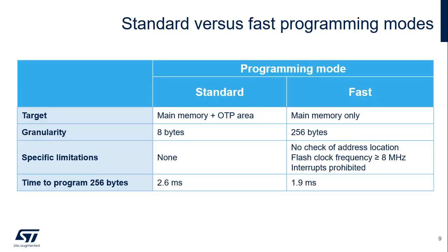The minimum clock frequency must be at least 8 megahertz in fast programming mode. Standard mode can be used to program the main memory and OTP areas, while fast mode cannot be used for OTP programming. Standard mode allows programming 64-bit double words, whereas fast mode only allows programming 32 64-bit double words or 256 bytes. In fast mode, the address location content is not checked before programming; the clock frequency must be greater than 8 MHz and CPU interrupts are prohibited. It takes 2.6 milliseconds to program 256 bytes in standard mode and 1.9 milliseconds in fast mode.